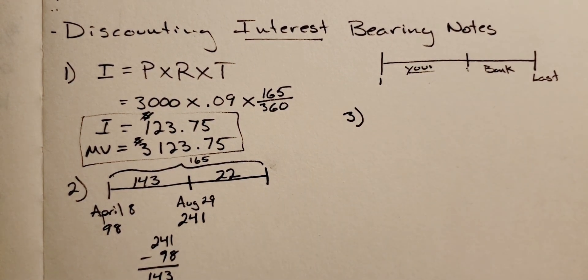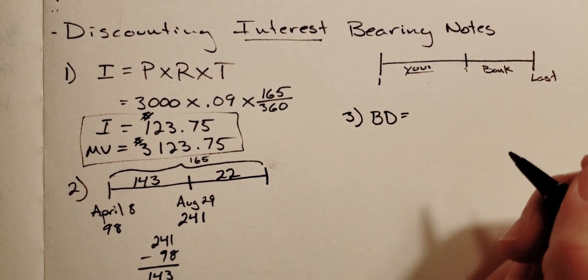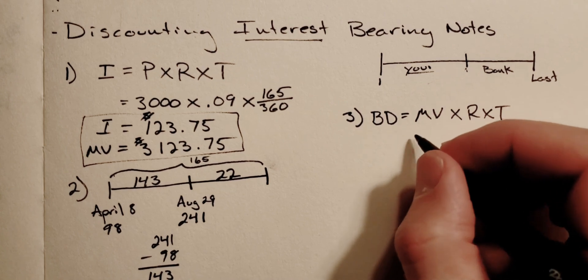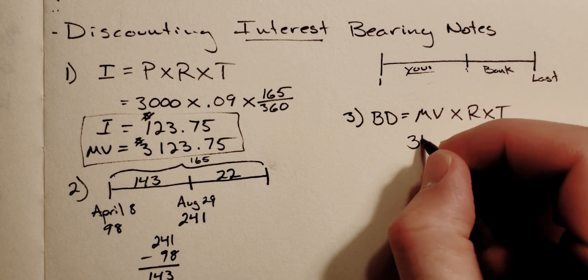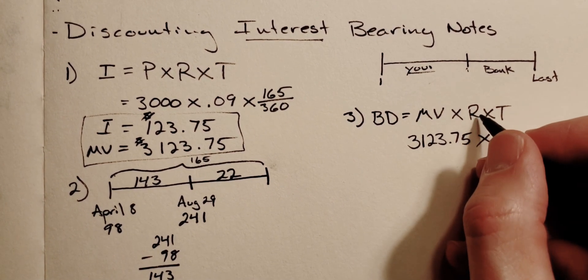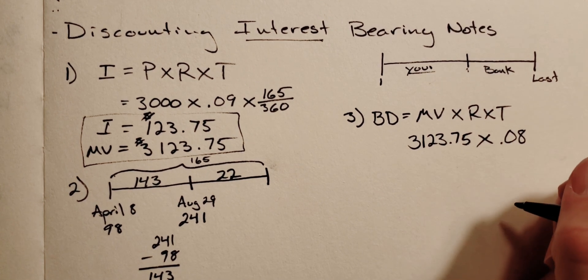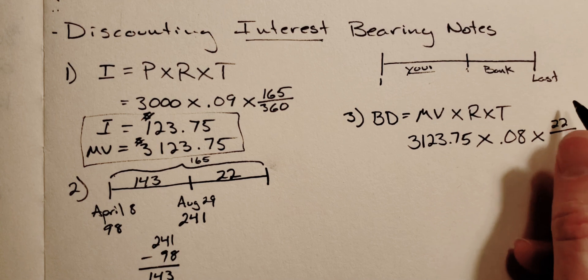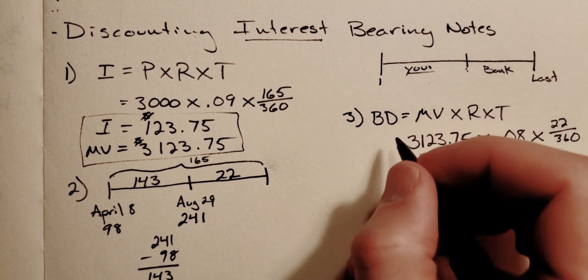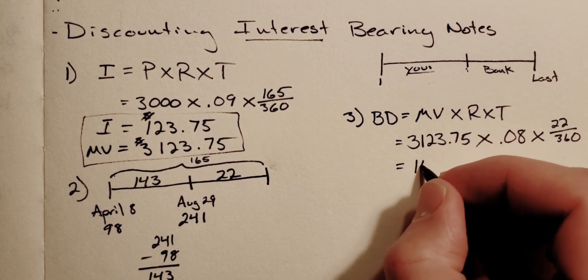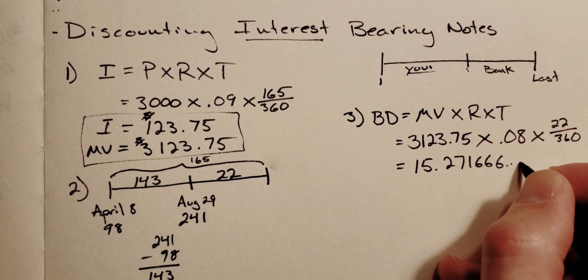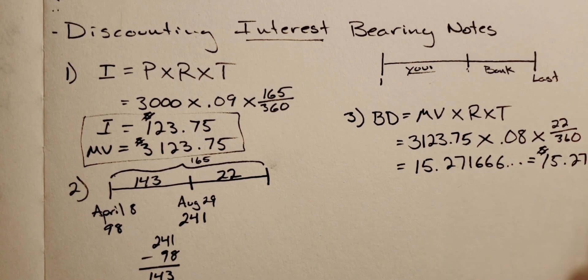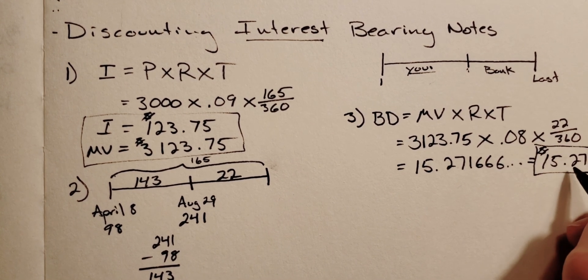So step number three is where we find the bank discount. And that's where we're going to refer to that new equation from this chapter. Bank discount equals maturity value times rate times time, where maturity value, again, is our answer from step number one, $3,123.75 times our rate, but it's our bank discount rate now of 0.08% times our time. Now it's, again, only the time the bank held it. So it's 22 days out of 360. So when I multiply all that out, I'll end up with this number which is going to round to $15.27. So what this refers to is the cash discount. That's how much we're paying the bank to cash the note in early.